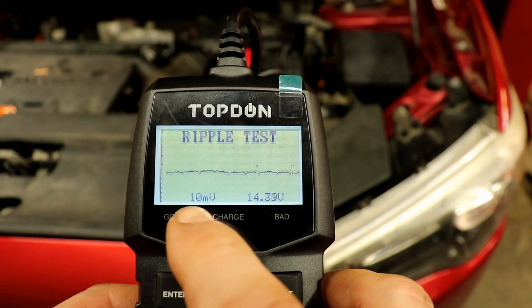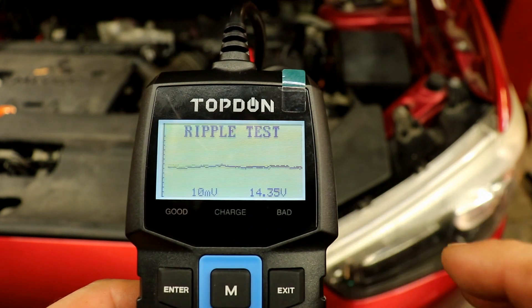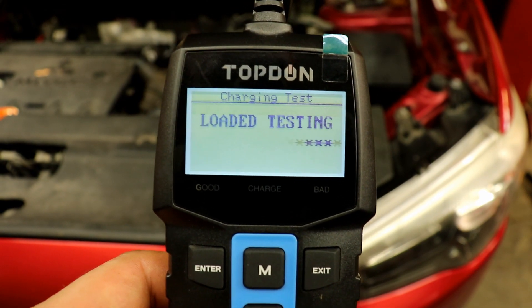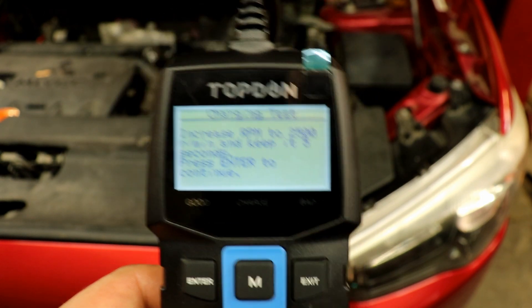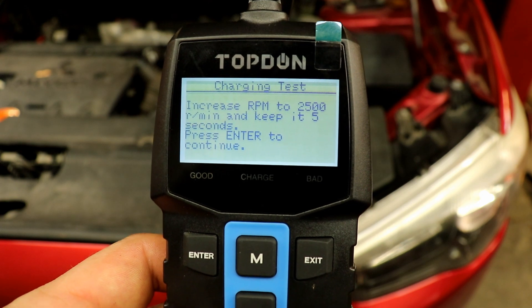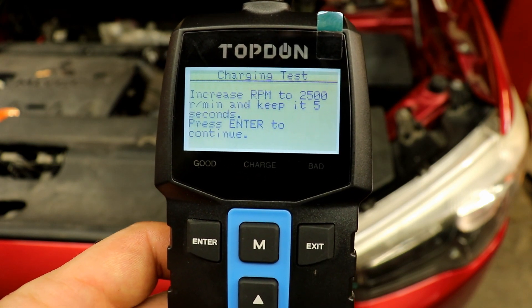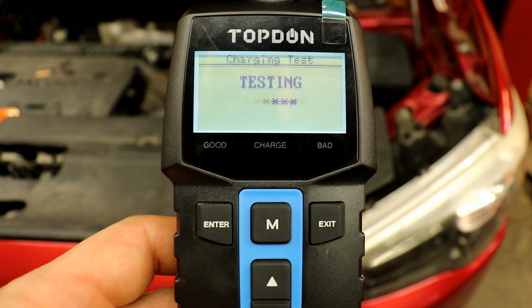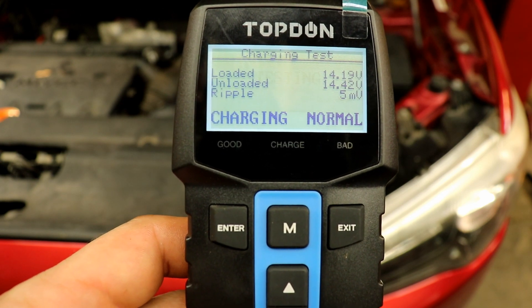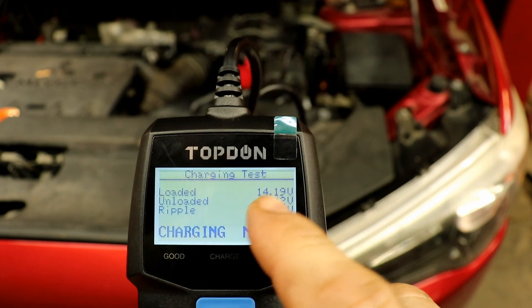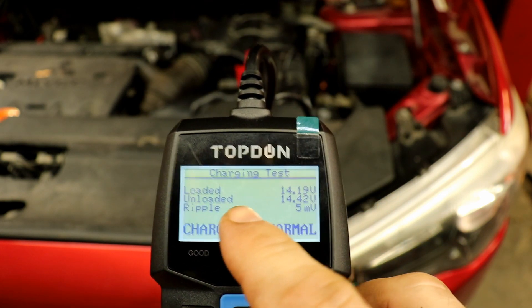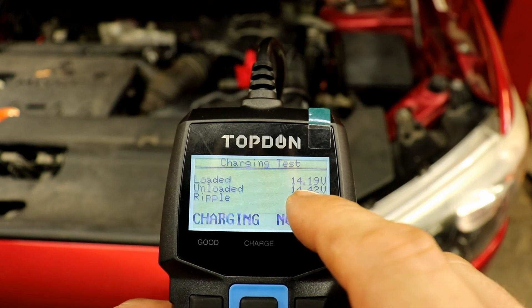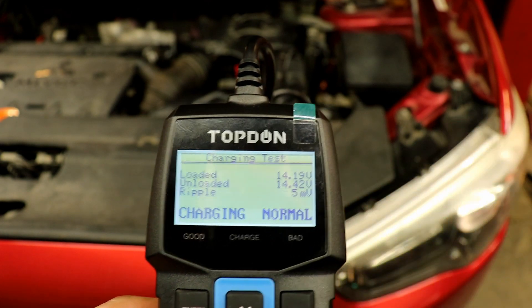The last feature we're going to look at is the charging test. It's testing for AC ripple and it's checking the voltage there. Everything is looking good right now. Increase the RPM to 2500. You can see the loaded test was 14.19 volts, unloaded was 14.4, ripple is 5 millivolts. Everything's looking good on this.